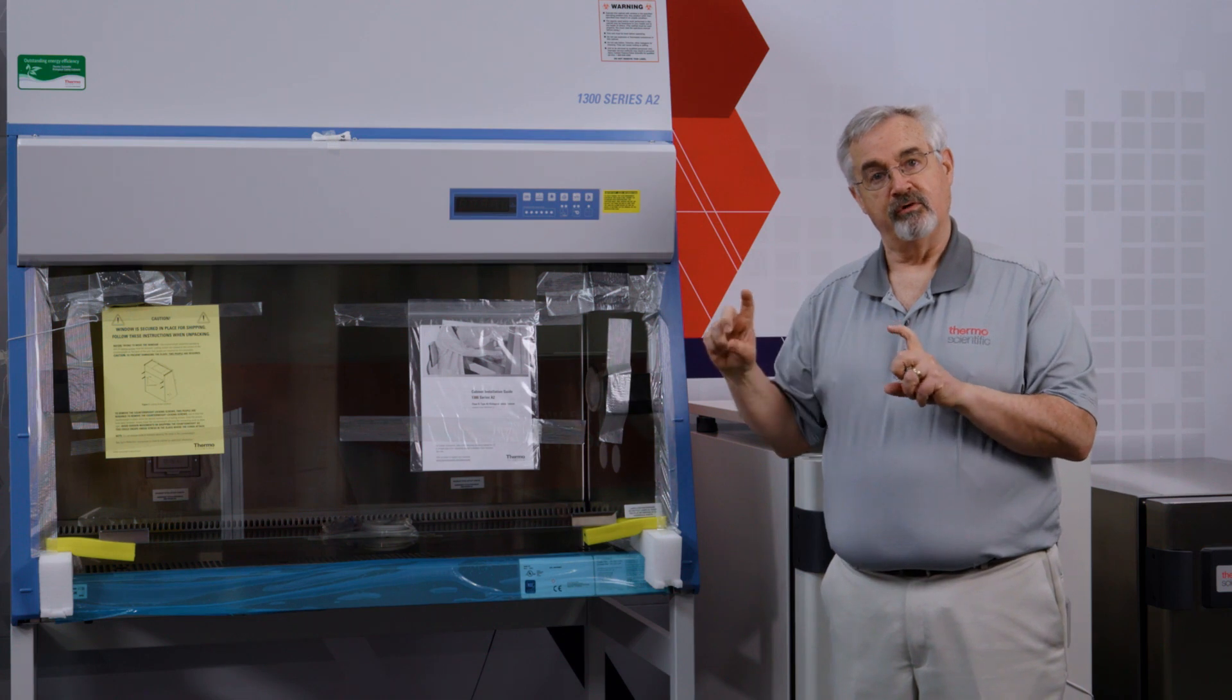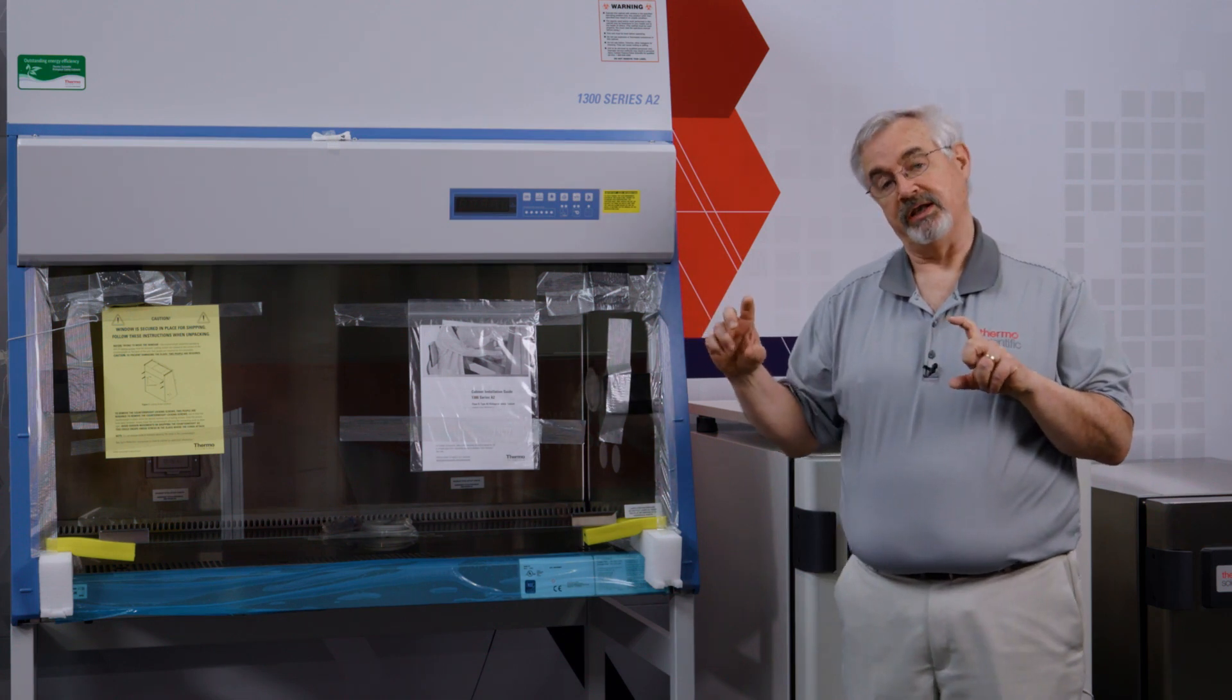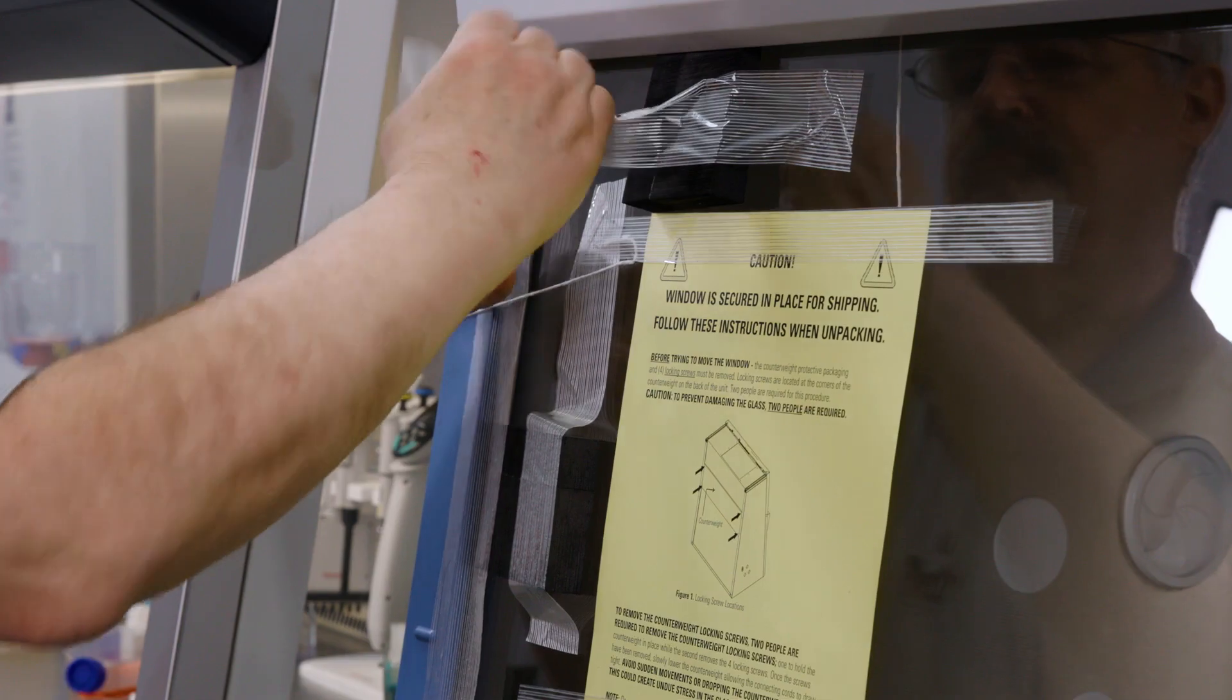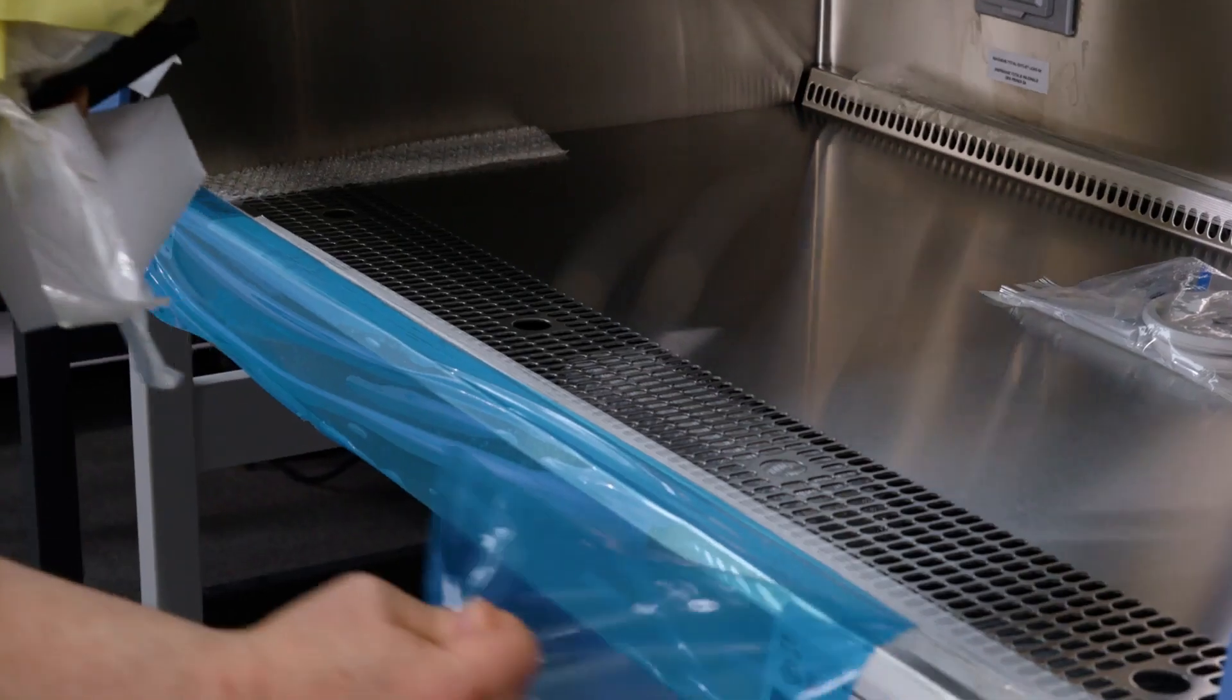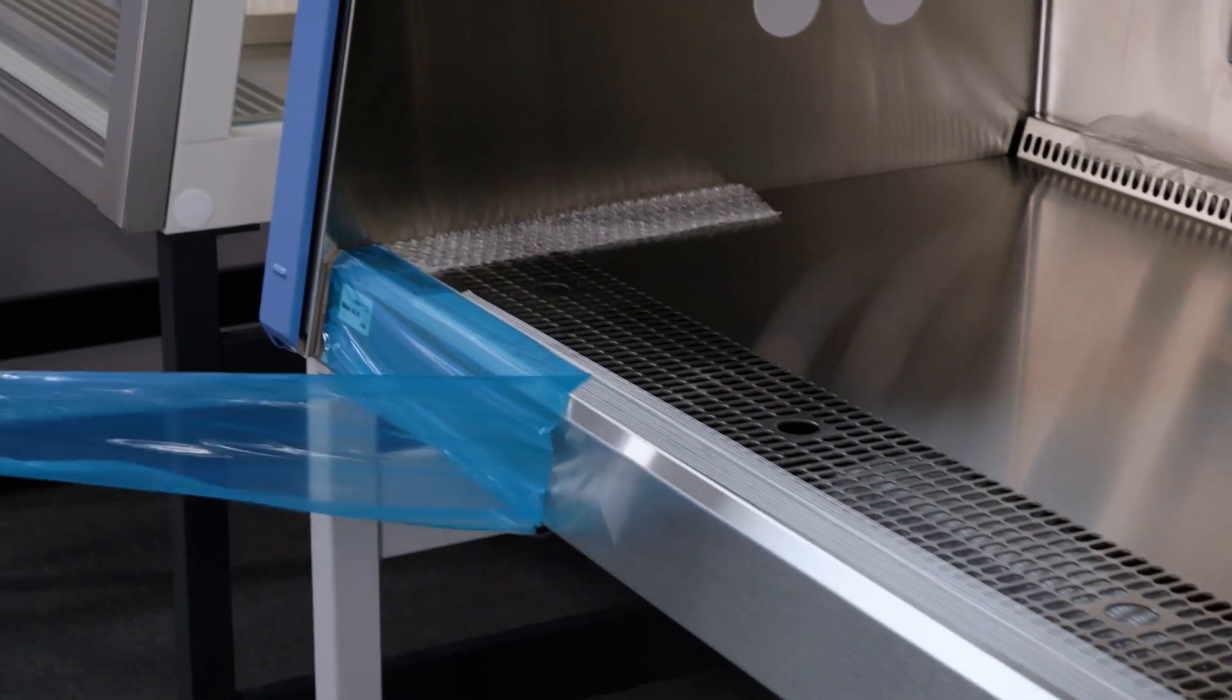We have removed the four screws holding the counterweight into place for shipping. So what we're going to do now is remove this packing material on the front of the cabinet and we'll move on to the things we'll find on the inside and we'll also attach the drain valve.